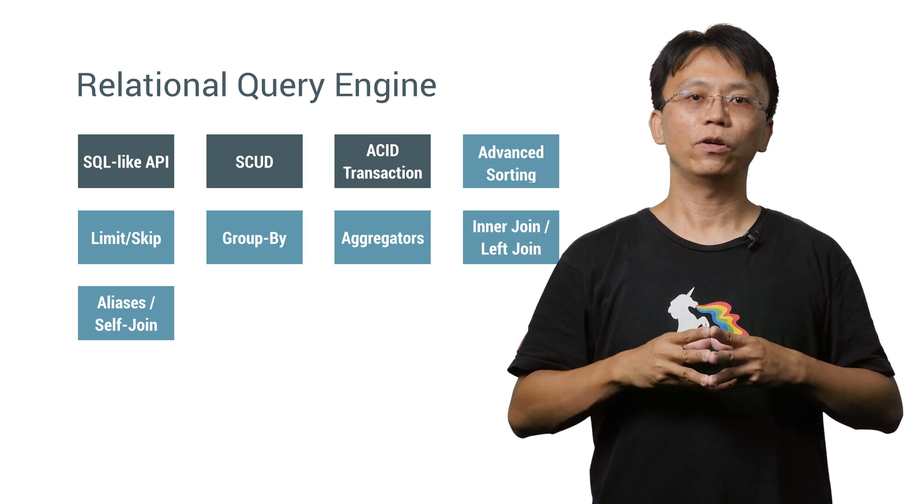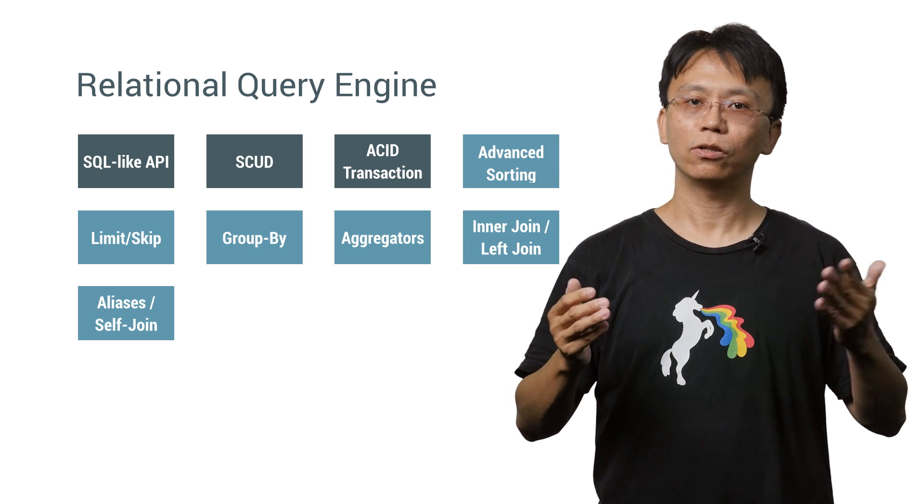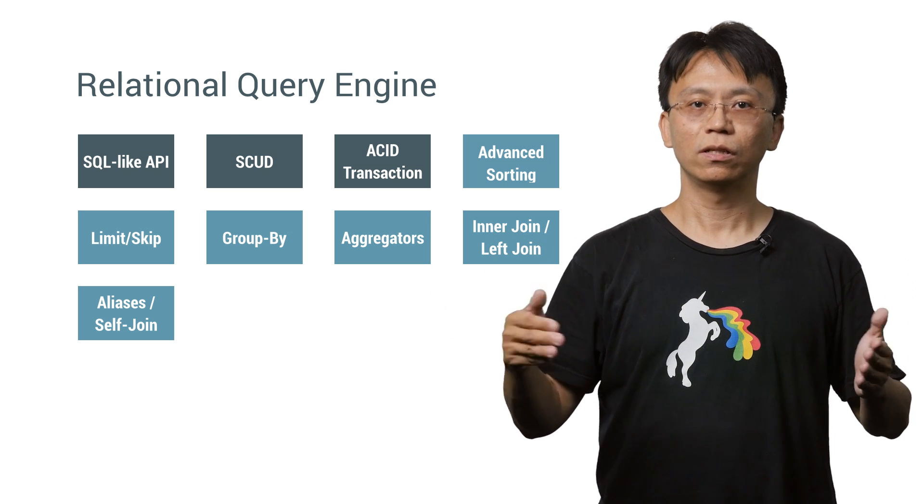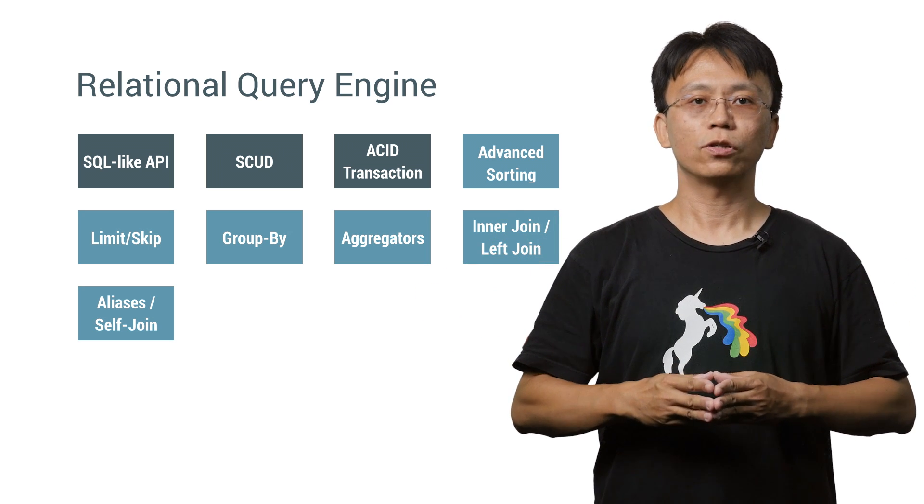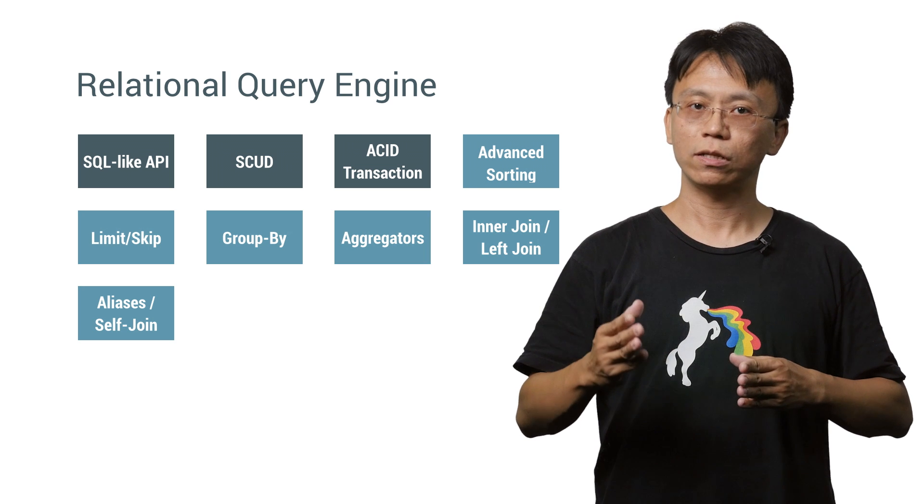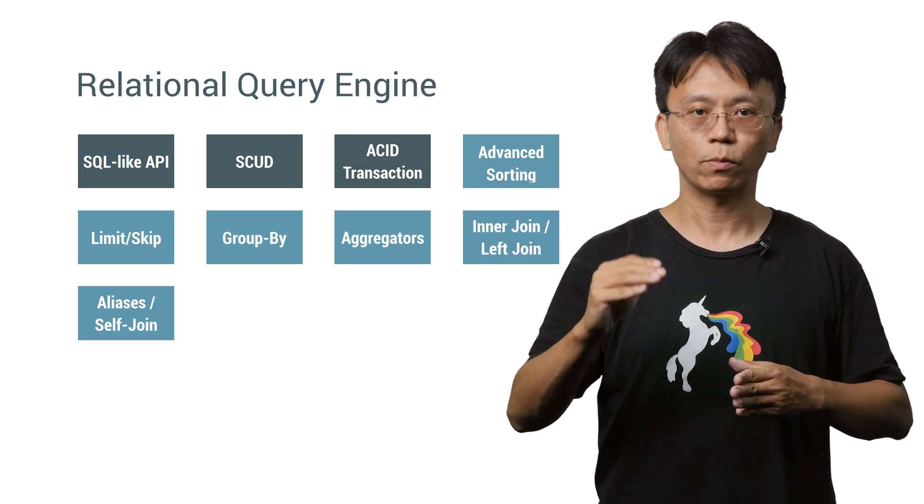Moreover, Lovefield has common aggregators, inner table join, self table join, left outer join, and aliases. These features empower you to perform very complex queries in very few lines of code.